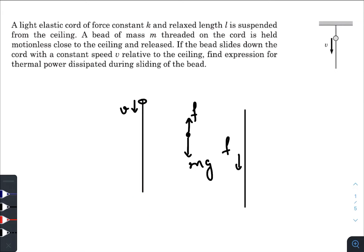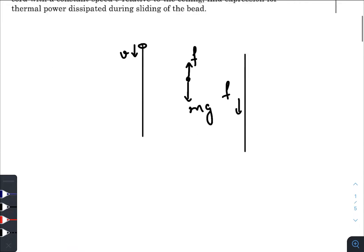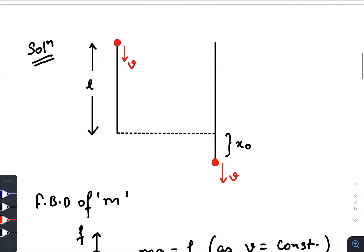I have drawn the situations. As I've already said, there was a bead starting with speed V, its speed remains constant, and when that bead comes out from the string, there will be some extension of the string. The string will elongate by some amount just when the bead leaves the string.